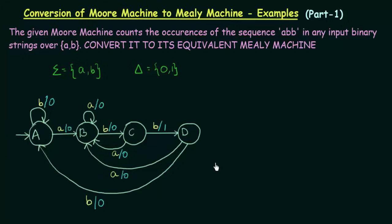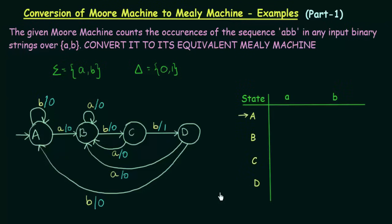Now let us design the transition table for this Mealy machine. We have states A, B, C, D, where A is the starting or initial state. We have two inputs which are A and B. The output should be associated to the transitions. We will look at the diagram and fill up this table.